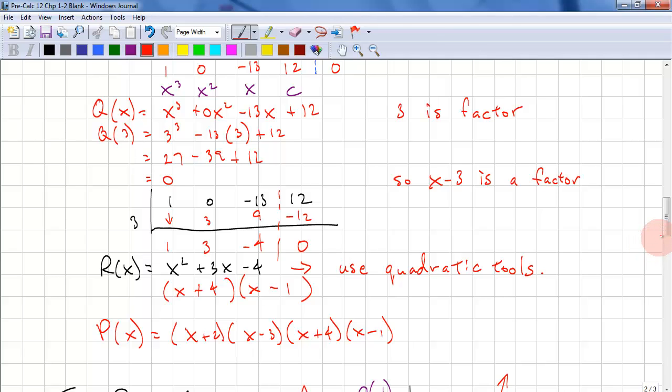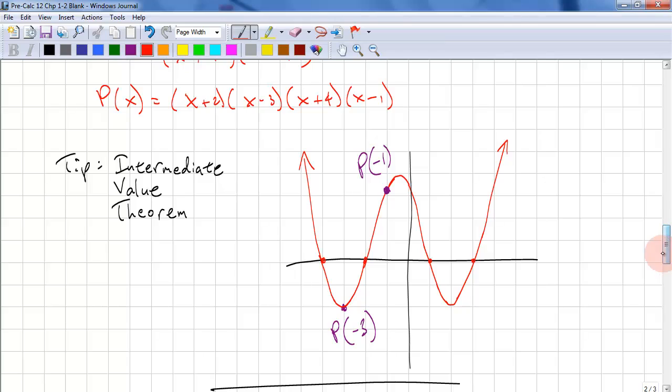A tip on how to use the factoring tools. You won't learn this until calculus. It's called the Intermediate Value Theorem, but it makes sense. So using the same P(x), if we calculated P of negative 3, we would get some negative value. If we calculate P of negative 1, we'd get a positive value. And since this is a continuous function, meaning that we can draw the curve without ever lifting our pen up,